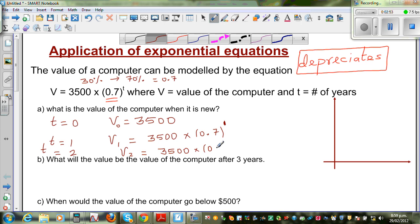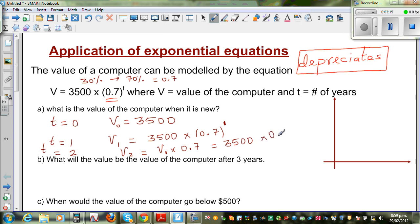Let's understand this in a different way. The value after two years would be v1, that's the value after one year, times 70% of that year. So this is 3,500 times 0.7, times 0.7.